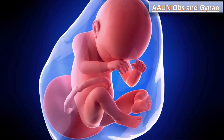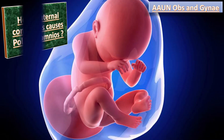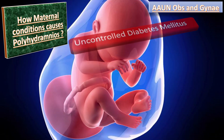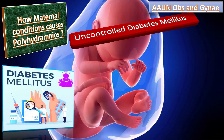Now we will talk about the different causes of polyhydramnios and how they can cause it. How do maternal conditions cause increased amniotic fluid volume? First, uncontrolled diabetes mellitus: maternal high blood sugar can cross the placenta, causing fetal hyperglycemia, which results in increased osmotic diuresis, subsequently leading to polyuria.